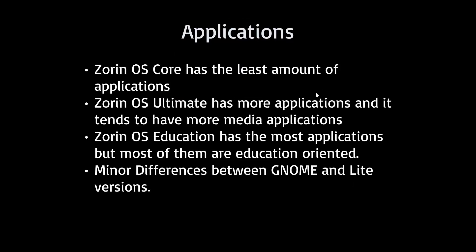Let's start with applications. Zorin OS Core has the least amount of applications — it basically just has the bare essentials. Ultimate has more applications, and it tends to have more media applications that people might use, not daily, but maybe once a month or once a week, depending on what people use their computer for. Education has the most applications out of the three editions, or six if you count all the Lite versions, but the applications are all education-oriented and would probably be used by a student.